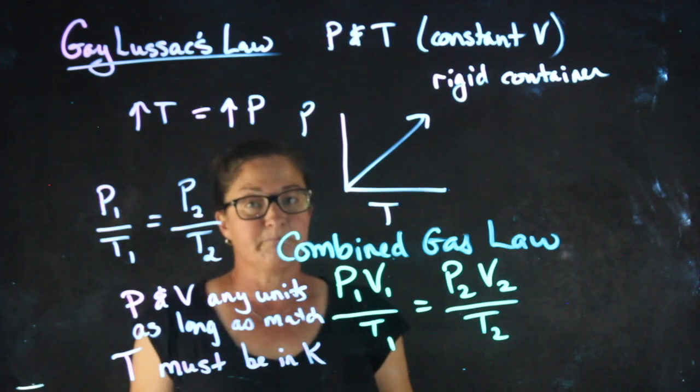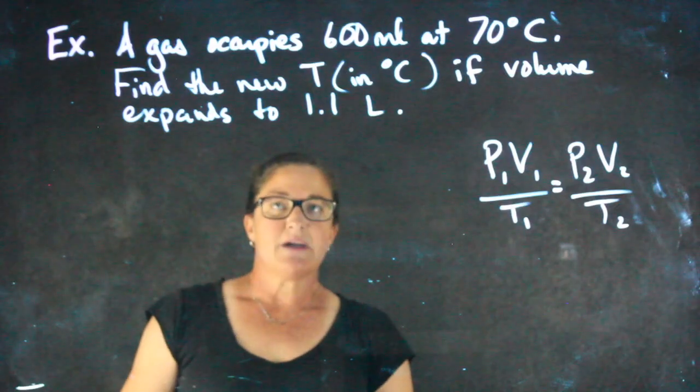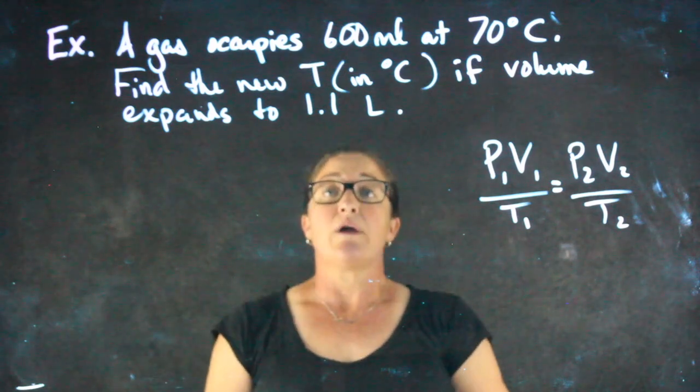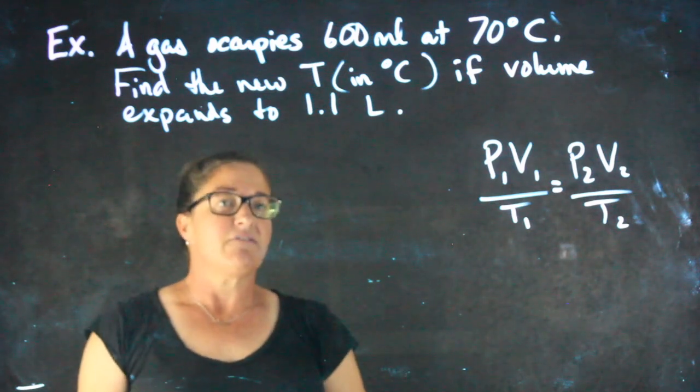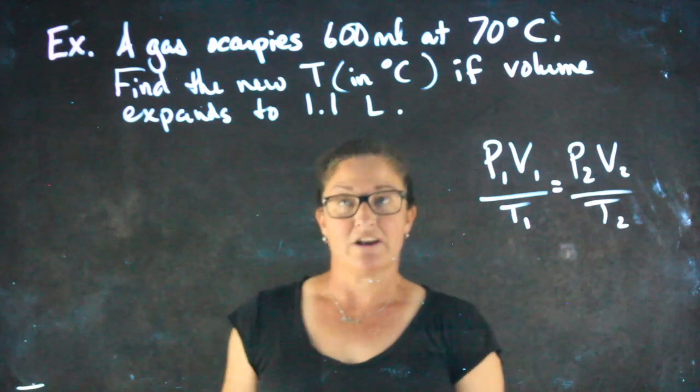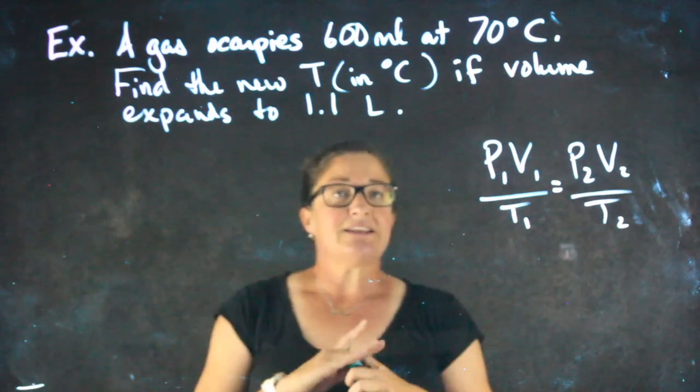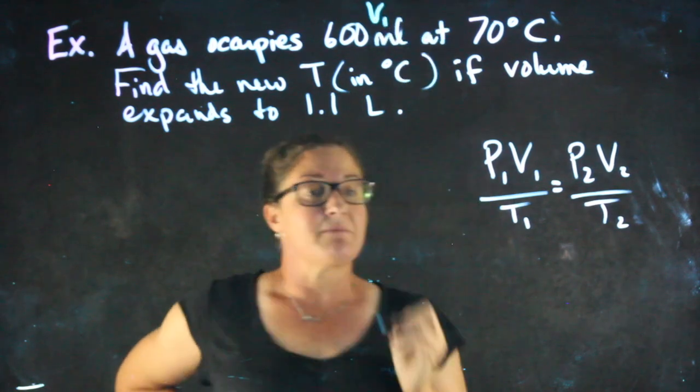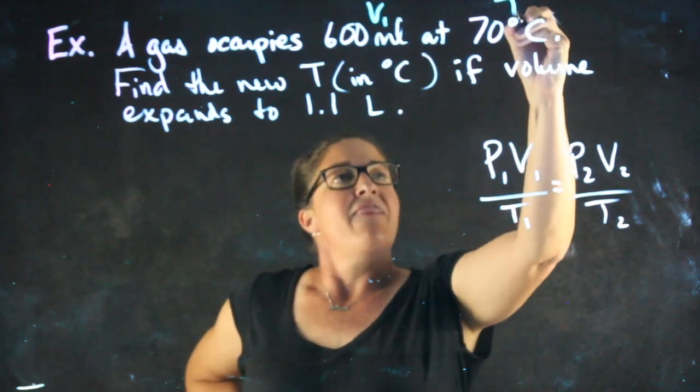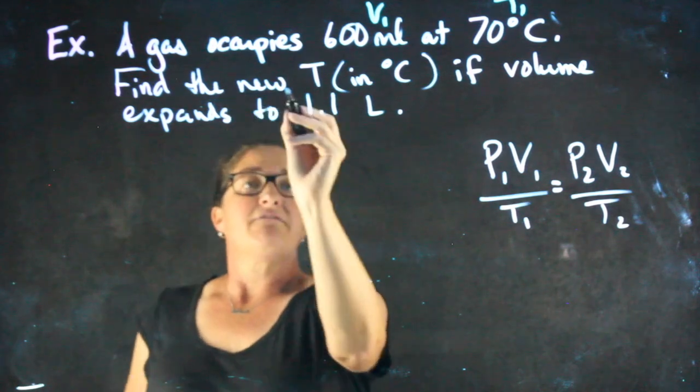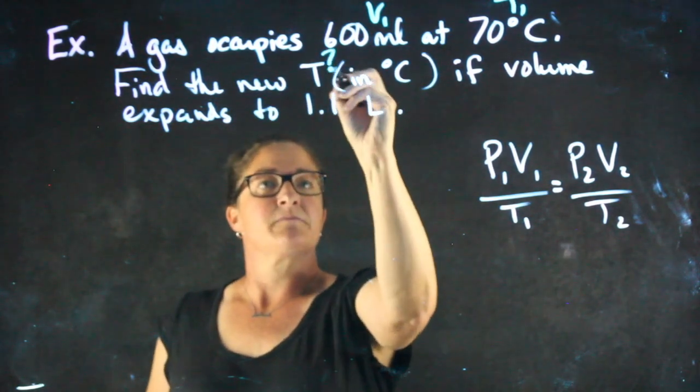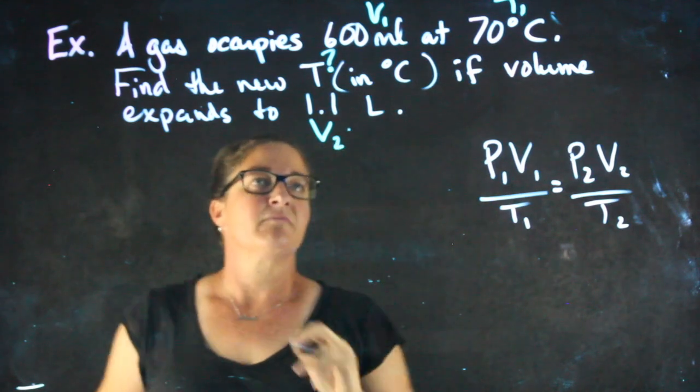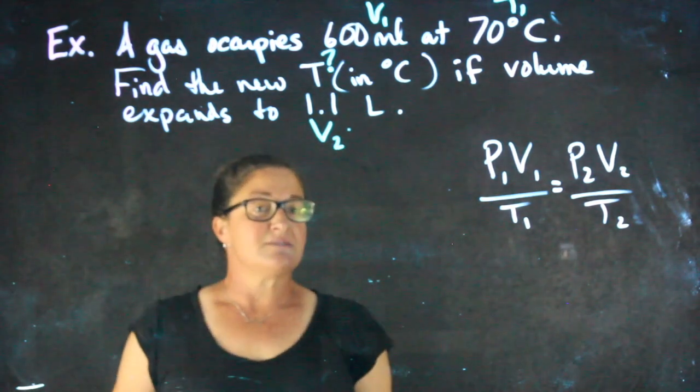Now we're going to take a look at a practice problem. Here's a sample problem. A gas occupies 600 milliliters at 70 degrees Celsius. We want to find the new temperature if the volume expands to 1.1 liters. So going through and identifying my variables, 600 milliliters, that's a volume. I'm going to call that V1. And that goes with this temperature. We're going to find the new temperature if the volume expands to 1.1 liters.